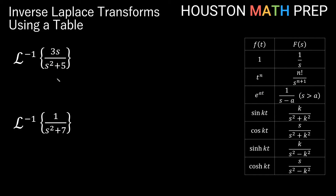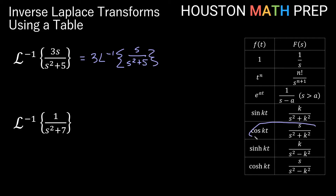Looking at the next two — they both have s squared plus something in the denominator. The one with an s on top fits the cosine of kt formula; the one with just a constant fits the sine of kt formula. Starting with 3s over s squared plus 5: bump the 3 out front to get 3 times the inverse transform of s over s squared plus 5. Using cosine of kt, if k squared equals 5 then k is square root of 5. So we get 3 times cosine of square root 5 times t.